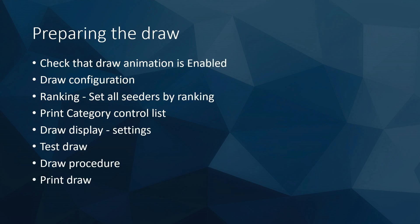In the preparation of the draw, there are a few steps that should always be made. Check that the draw animation is enabled. Then you need to prepare draw configuration, ranking, and set all the seeders by ranking, print category list, draw display — you have to set correct settings — then you need to test the draw, then the whole draw procedure, and in the end you print the draws.